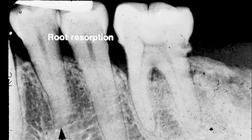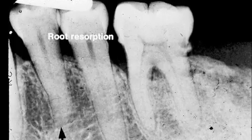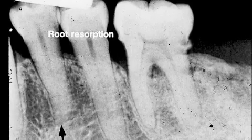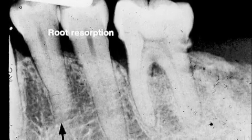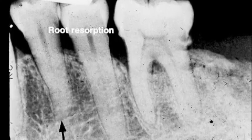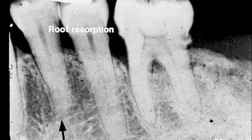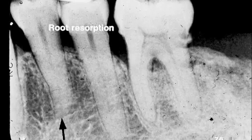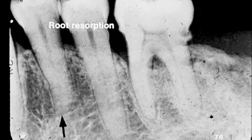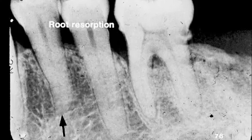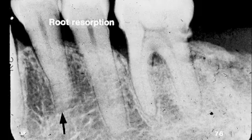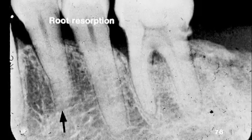Tooth number 21 shows external root resorption. When we compare the length of tooth number 21's root to the length of the root for tooth number 20, we will notice that the root is shorter and blunt. This is an indication of external root resorption.